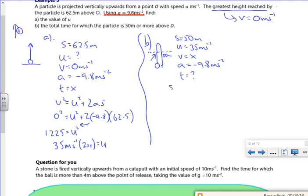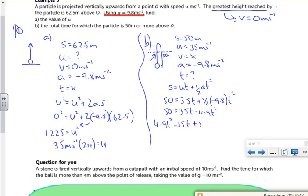What I've got, s equals ut plus a half a t squared. So 50 is 35t plus a half times minus 9.8 t squared. So 50 is 35t minus 4.9 t squared. Take it all over to make it easier. So 4.9 t squared minus 35t plus 50 equals 0. Put that in poly.